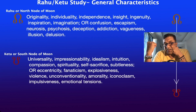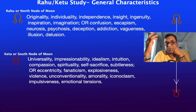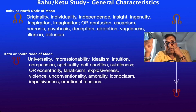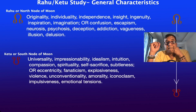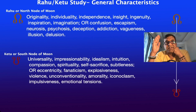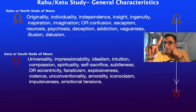The Rahu Ketu general characteristics in modern interpretation — borrowed from the book 'Light on Life' by Roberts, which is an excellent book. Rahu is responsible for originality, individuality, independence, insight, ingenuity, inspiration, and imagination on the positive side. Because Rahu and Ketu love to explore foreign things — things out of the box, things not taught by tradition — they will be anything but traditional. If there is one singular force responsible for thinking out of the box and modernizing things, it is this.